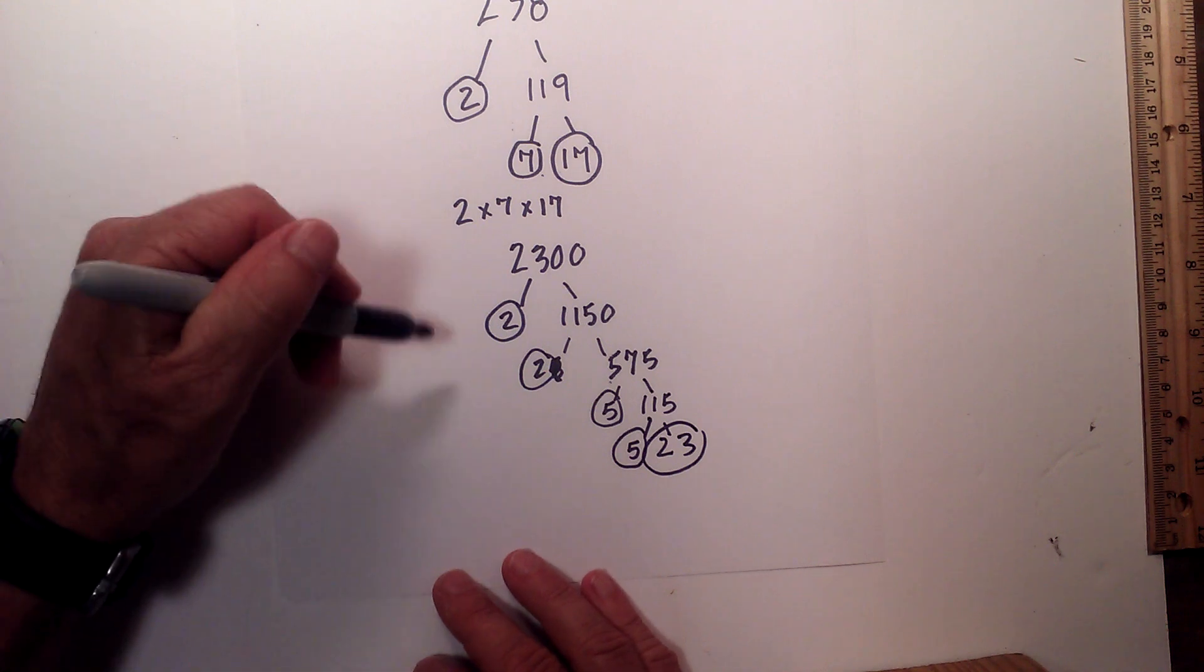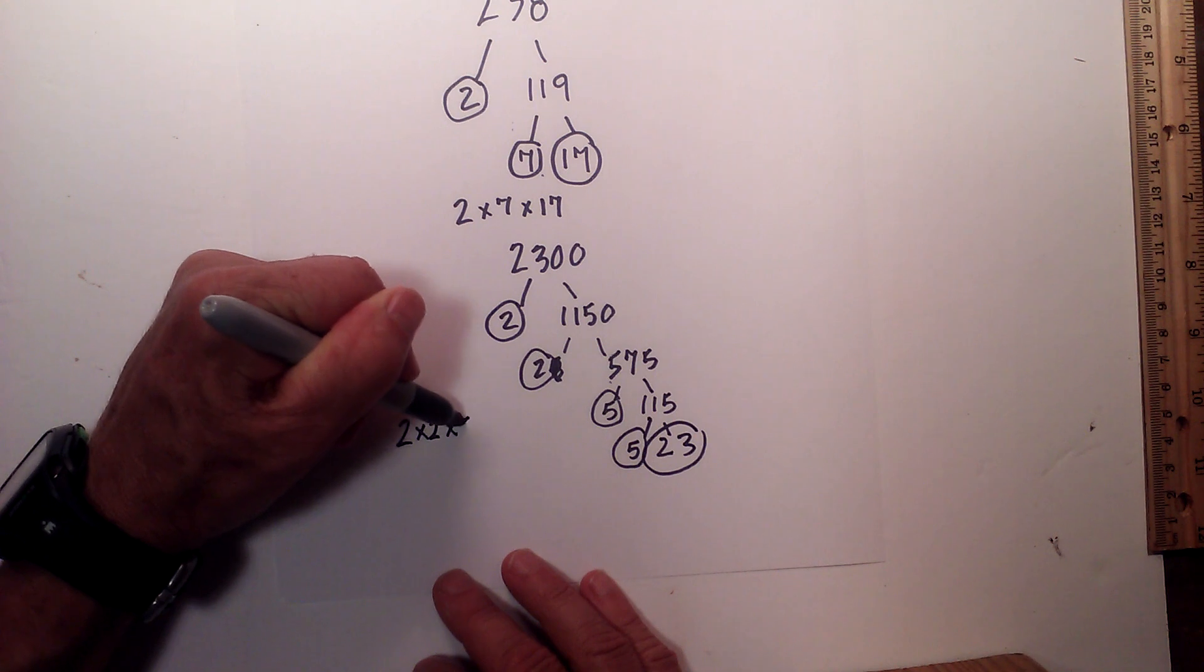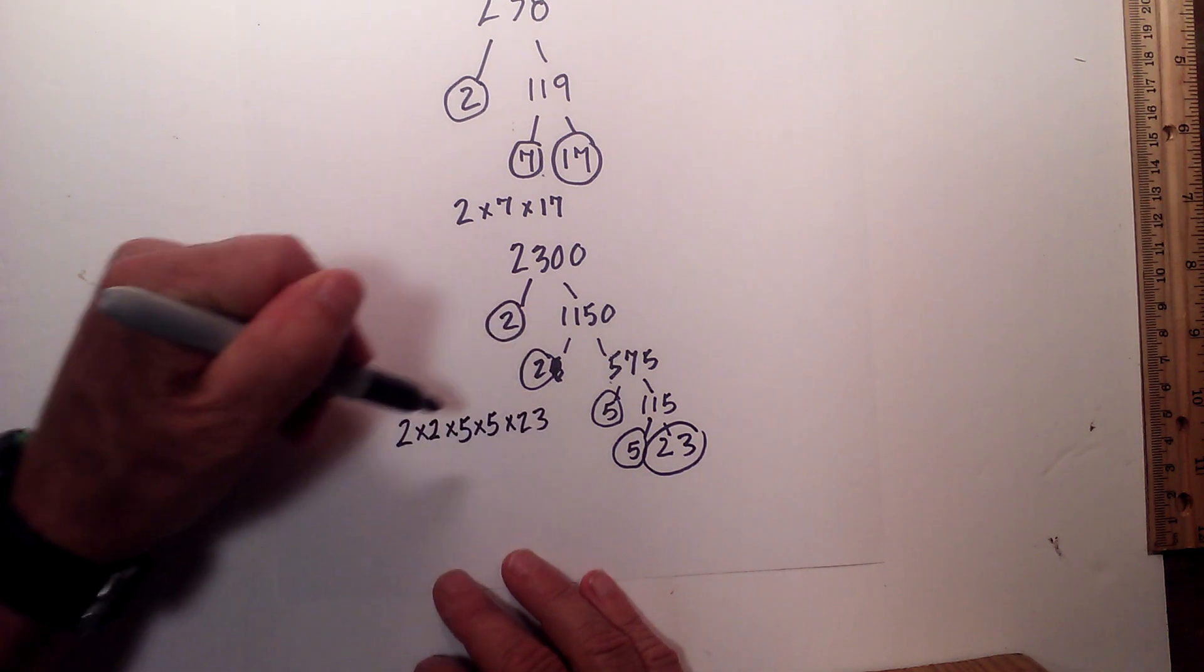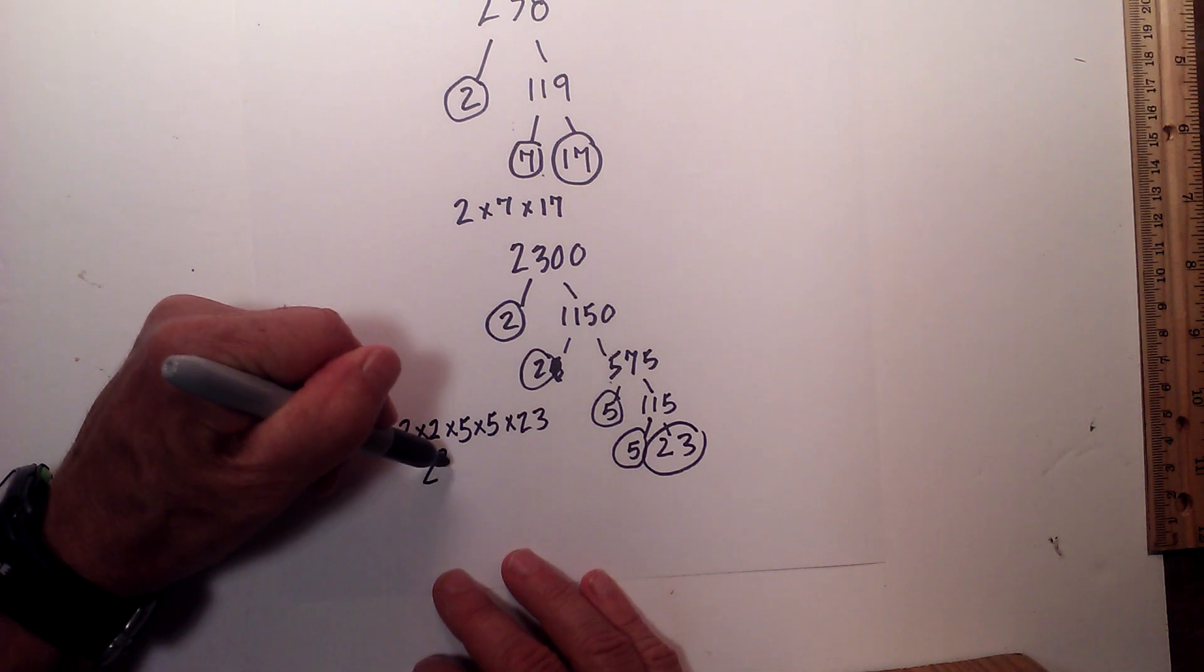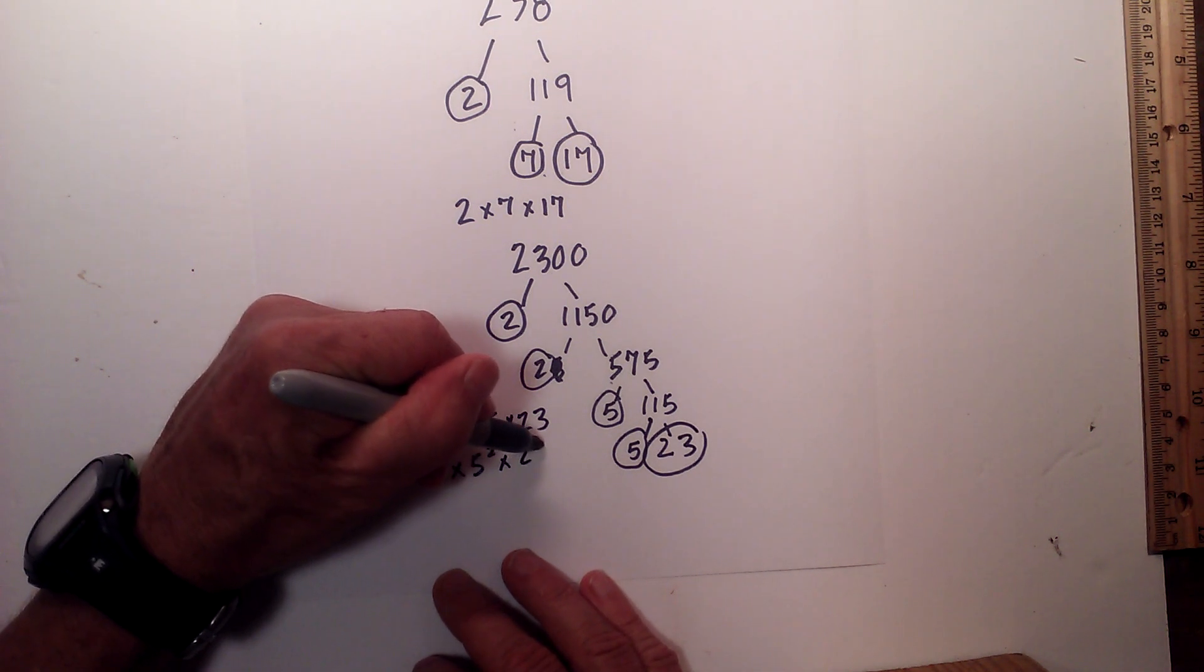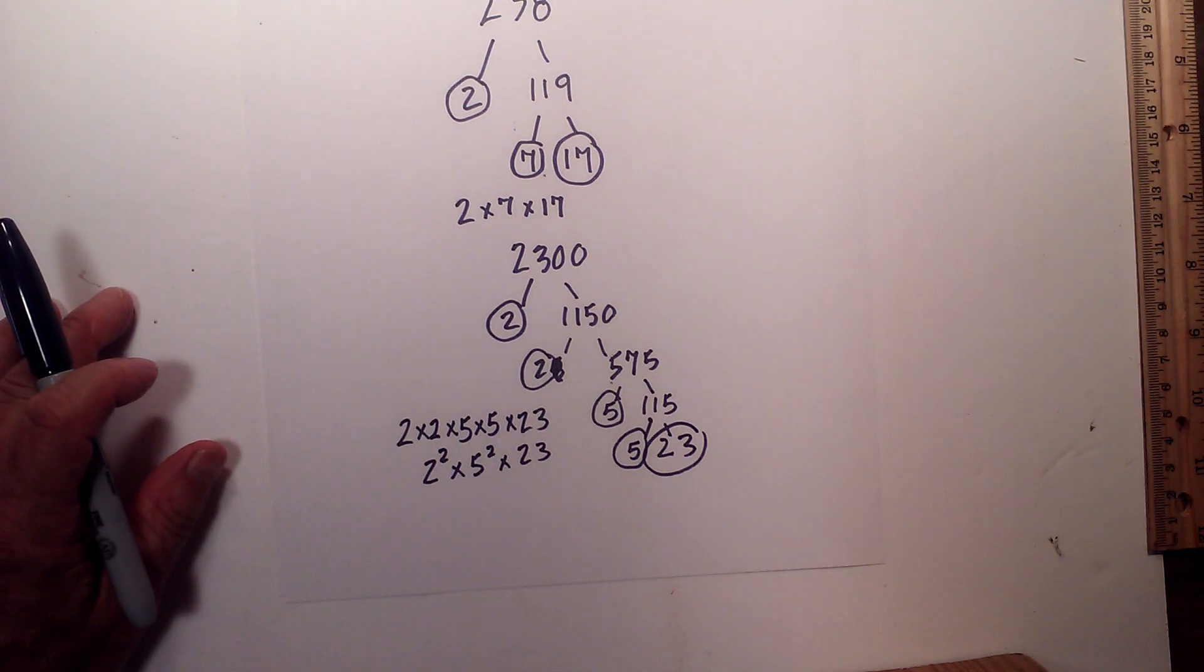So the prime factorization of 2300 is 2 times 2 times 5 times 5 times 23, or 2 squared times 5 squared times 23. So there we go, the prime factorization of 238 and 2300.